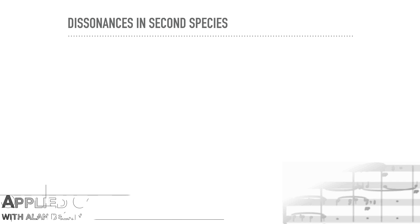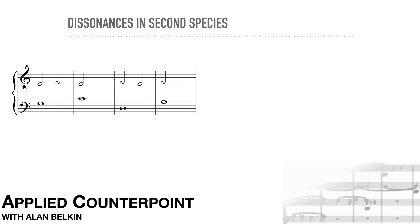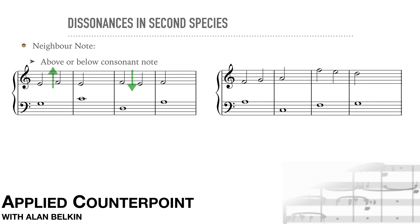There are two kinds of dissonances in second species. In the first, the dissonant note returns to the same note it started from. This is called the neighbor note. The neighbor note could be above or below — in other words, it can be an upper or lower neighbor. In the second situation, the dissonant note moves on stepwise to another note. This is called a passing tone. As with neighbor tones, passing notes can go up or down.